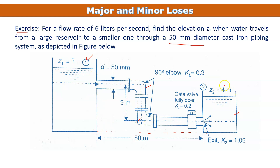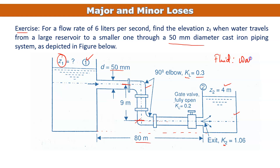z2 is given as 4 meters. The 90-degree elbow minor loss coefficient is also given as 0.3. The diameter of the pipe is 50 mm. The pipe is not straight — it is horizontal, then goes down, then horizontal again. The horizontal distance is 9 meters and the total distance from tank 1 to tank 2 is 80 meters. The exit minor loss coefficient is given as 1.06. We need to calculate z1.